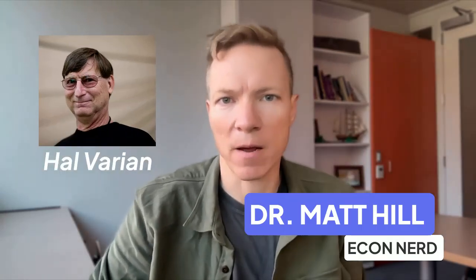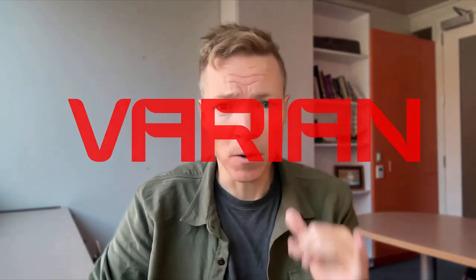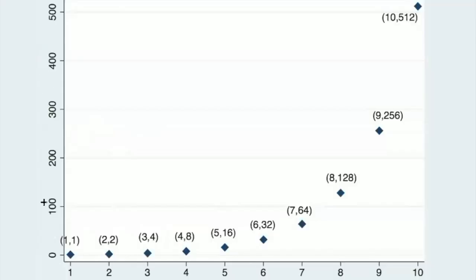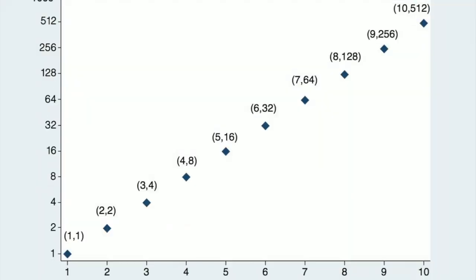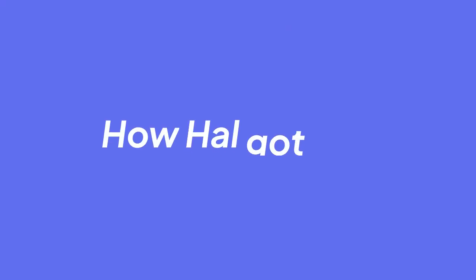Hal Varian is likely the world's richest economist. How did that happen? Was it his best-selling books, his pioneering papers on auctions, maybe his cool last name helped? Nope. It was just that one time he changed the y-axis on a graph to a logarithmic scale. That's it. Here's the story.